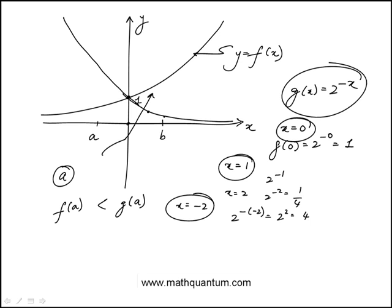Then for the second one, b is on this side. f(b) would be greater than g(b).